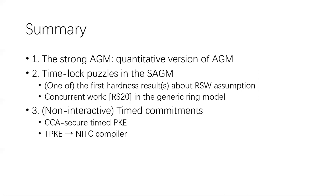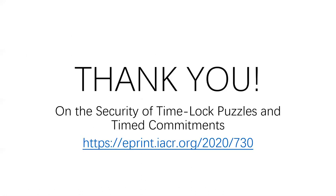To summarize, this paper has three main contributions. First, we proposed the strong AGM, which is a quantitative version of the AGM. Second, we analyze time lock puzzles in the strong AGM and present one of the first hardness results about the RSW assumption — there is also concurrent work in Crypto this year analyzing the same assumption but in the general group model. Finally, we construct non-interactive timed commitments, first constructing CCA secure timed public key encryption and then compiling from CCA secure timed public key encryption to non-interactive timed commitments. Thank you very much, and our paper is on ePrint if you are interested.